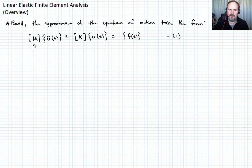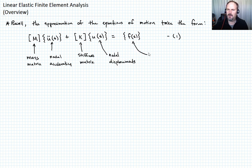Let me define these variables. M is the mass matrix, U double dot is our nodal acceleration vector, K is the stiffness matrix, U is our nodal displacements, and F is our nodal reaction forces.